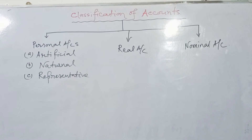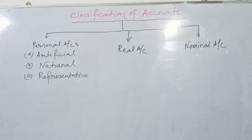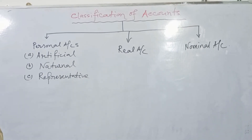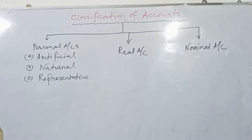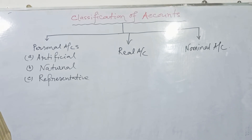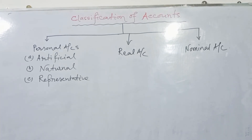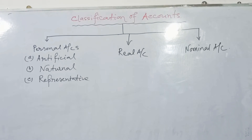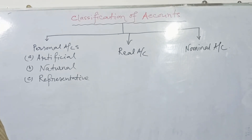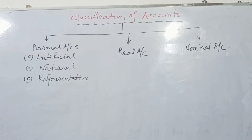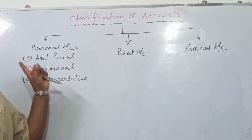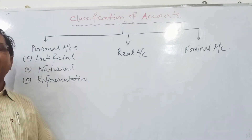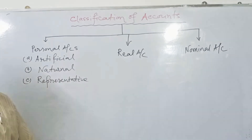All transactions relating to any account — say Ram account, salary account, or OJ's account — are recorded separately. An account is a ledger record that summarizes in form all records taken with a particular person or thing specified. The left-hand side is known as the debit side and the right-hand side is known as the credit side.